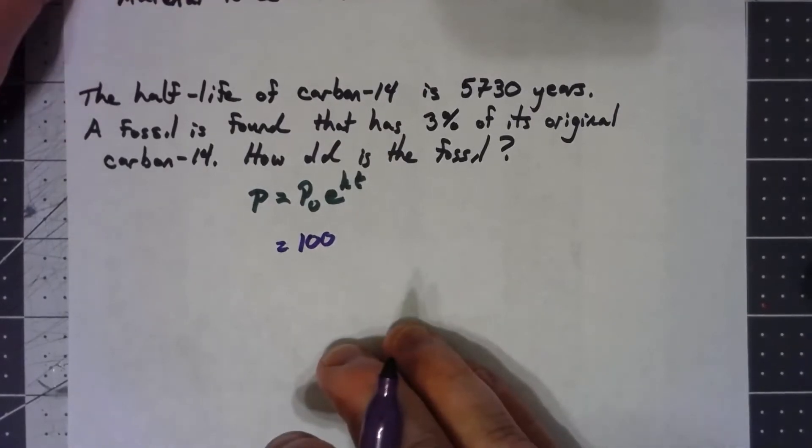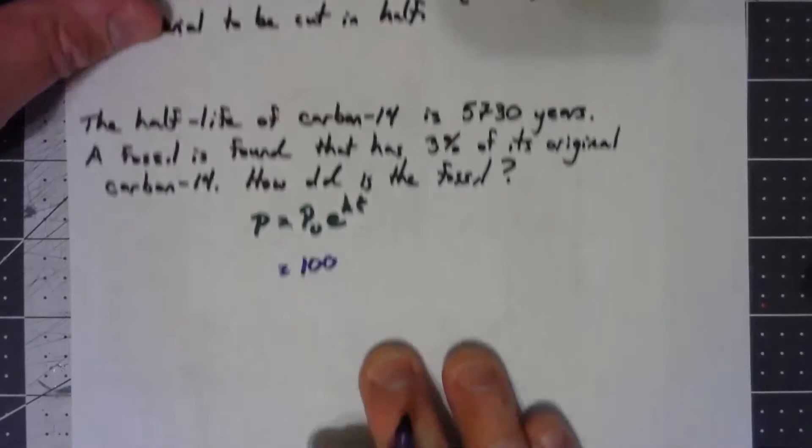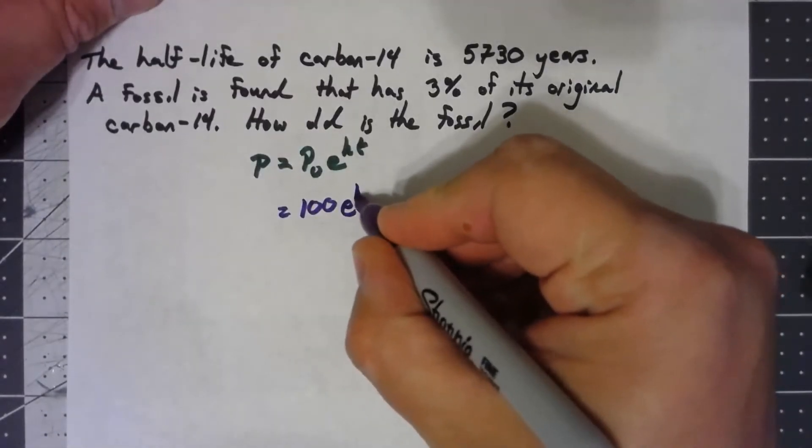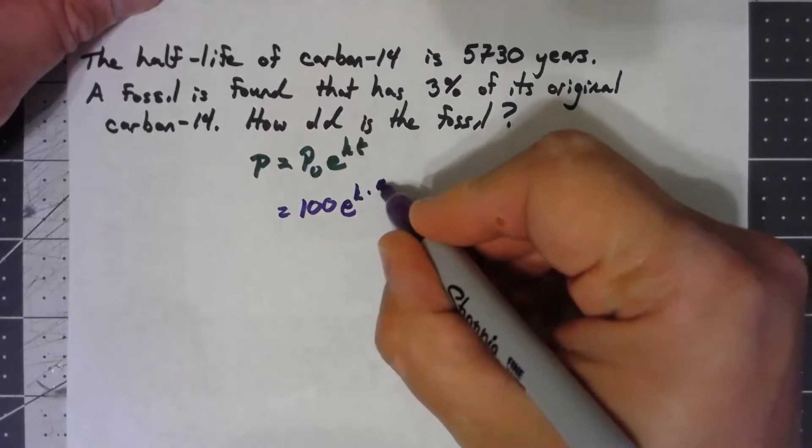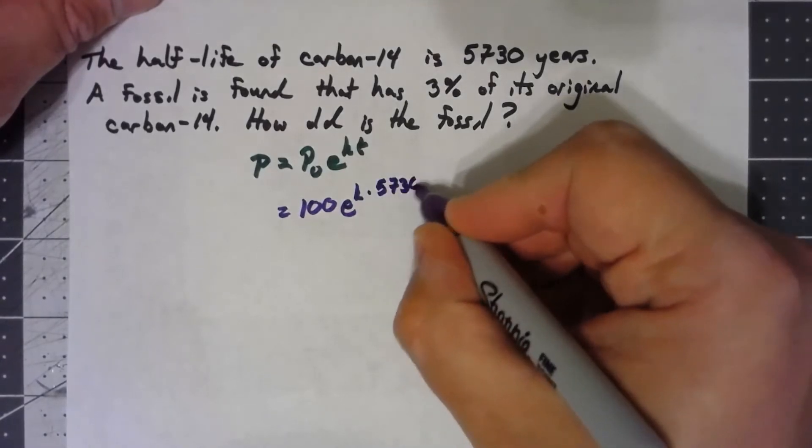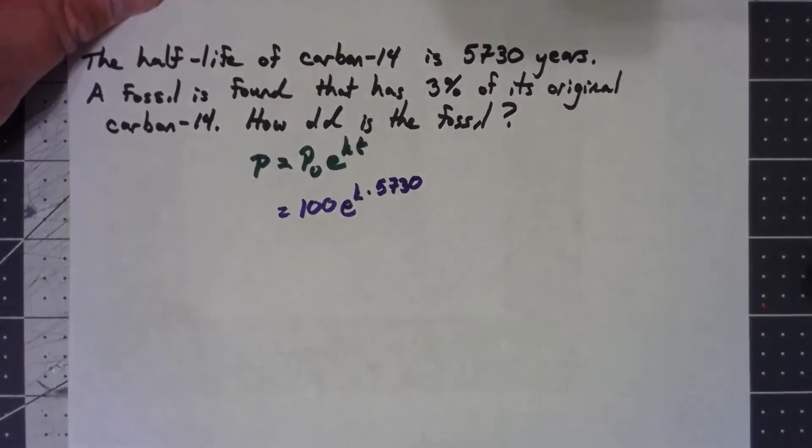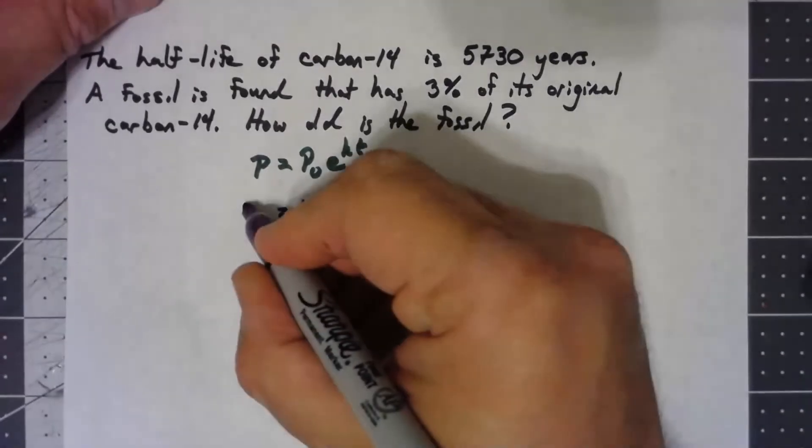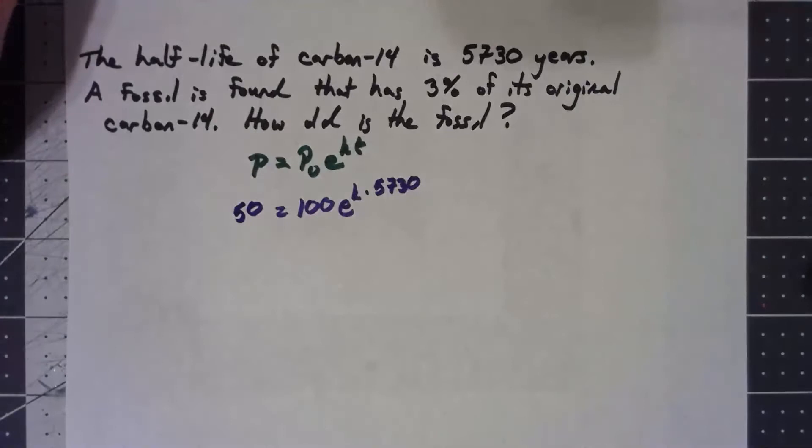Then because of the whole idea of half-life, I know that when the time passed is 5730 years, there's half of it remaining. So 50% is what remains. We can just do those populations in terms of percentages and then we can work it out as normal.